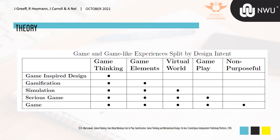Next are simulations, which are generally software where you use gameful thinking and game elements inside a virtual world to emulate things in the real world, generally for training purposes. There's a distinction between simulations — which are similar to games but not generally built to be fun — and serious games, which are also similar to simulations but are meant to be fun. A serious game is built for a specific purpose: to teach something or convey a message, whereas a normal game is played simply for fun.